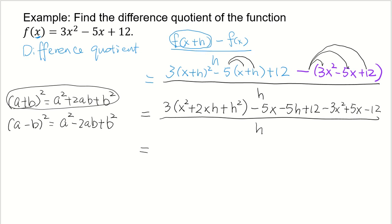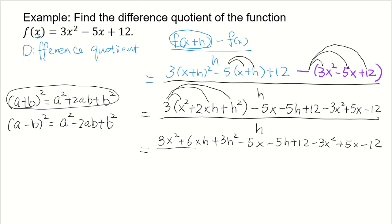So now I have, let me expand this part. Distribute this 3 to the 3 terms inside the parentheses. 3x squared plus 6xh plus 3h squared minus 5x minus 5h plus 12 minus 3x squared plus 5x minus 12, everything over h.